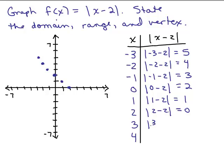Put in 3. So far I can't tell this is an absolute value. It looks like it's a line, but it's not. You know absolute value ends up looking like a V. So, |3 − 2| is 1. So I have (3, 1). Ah, there is where it starts going up again.